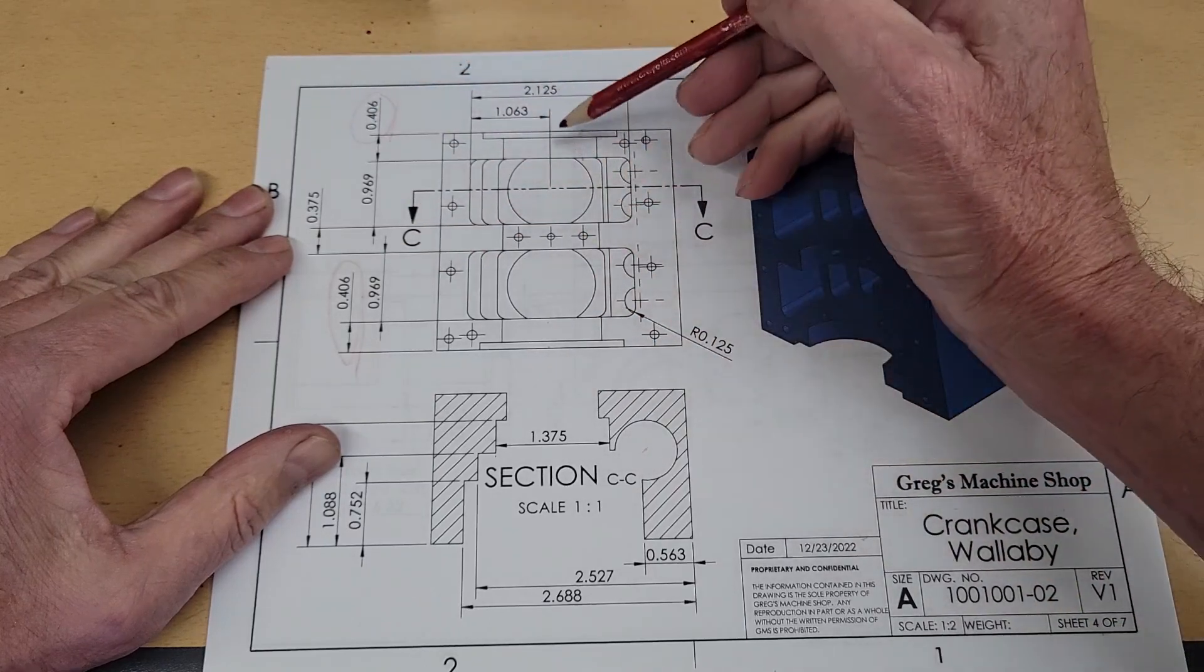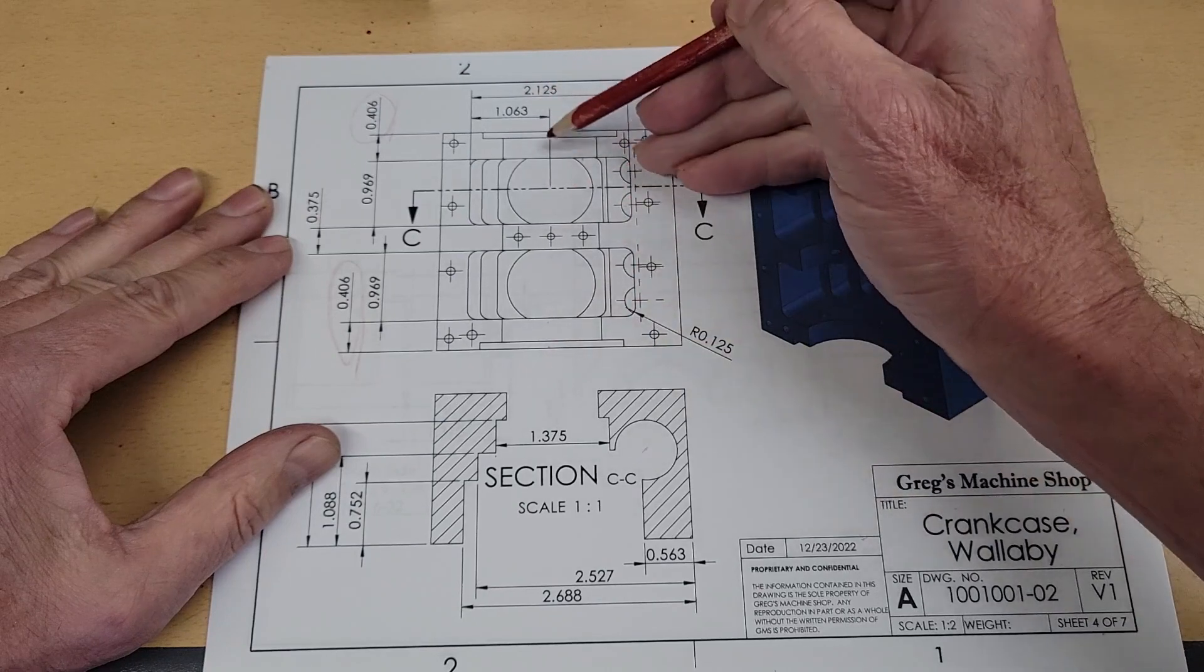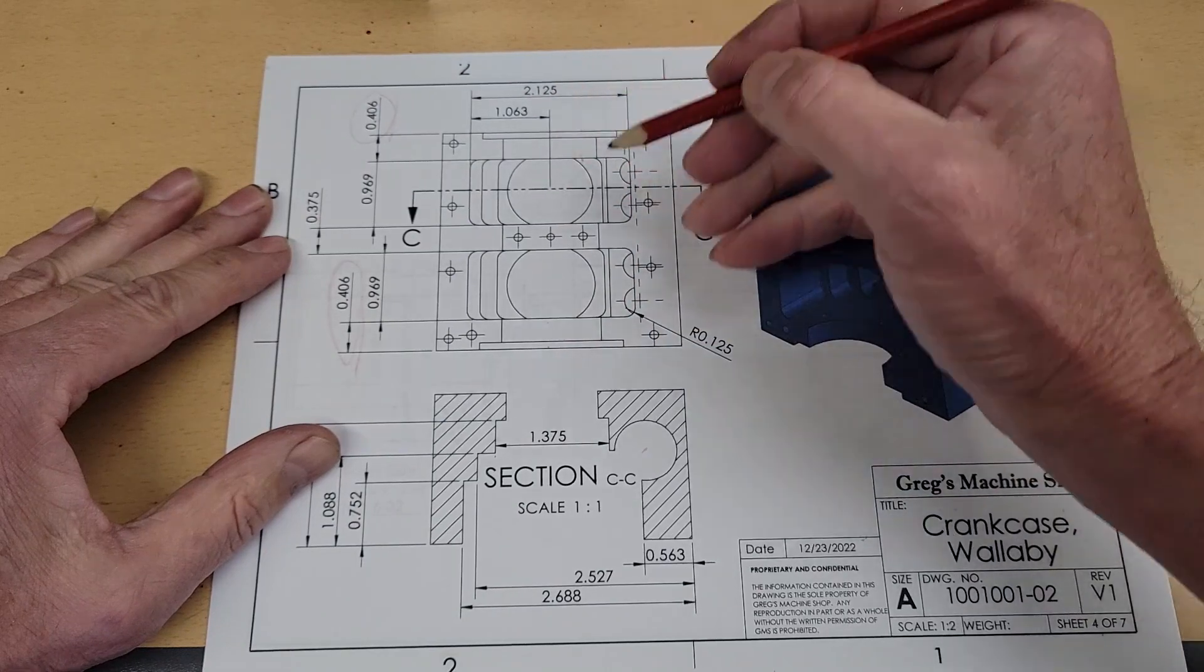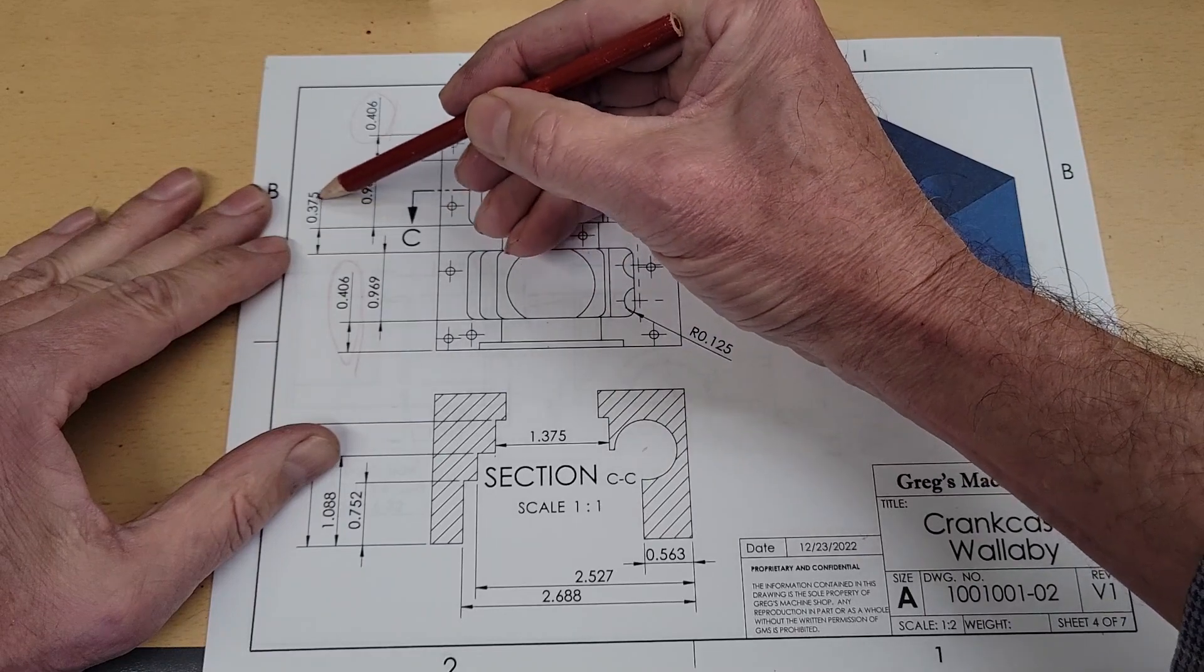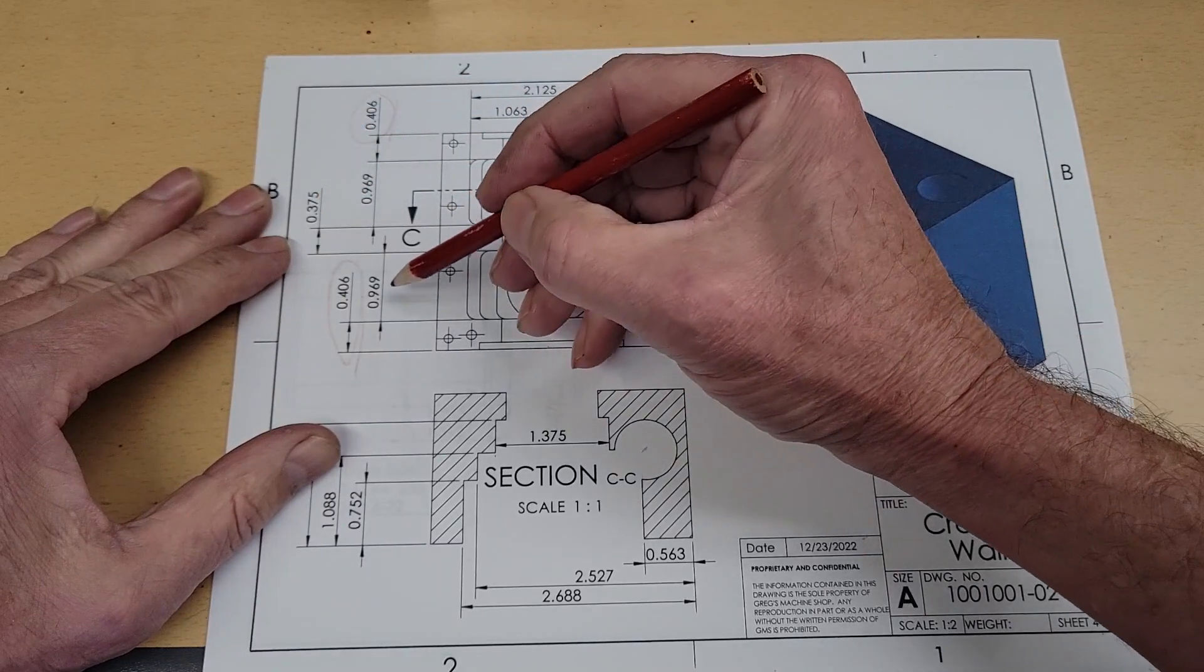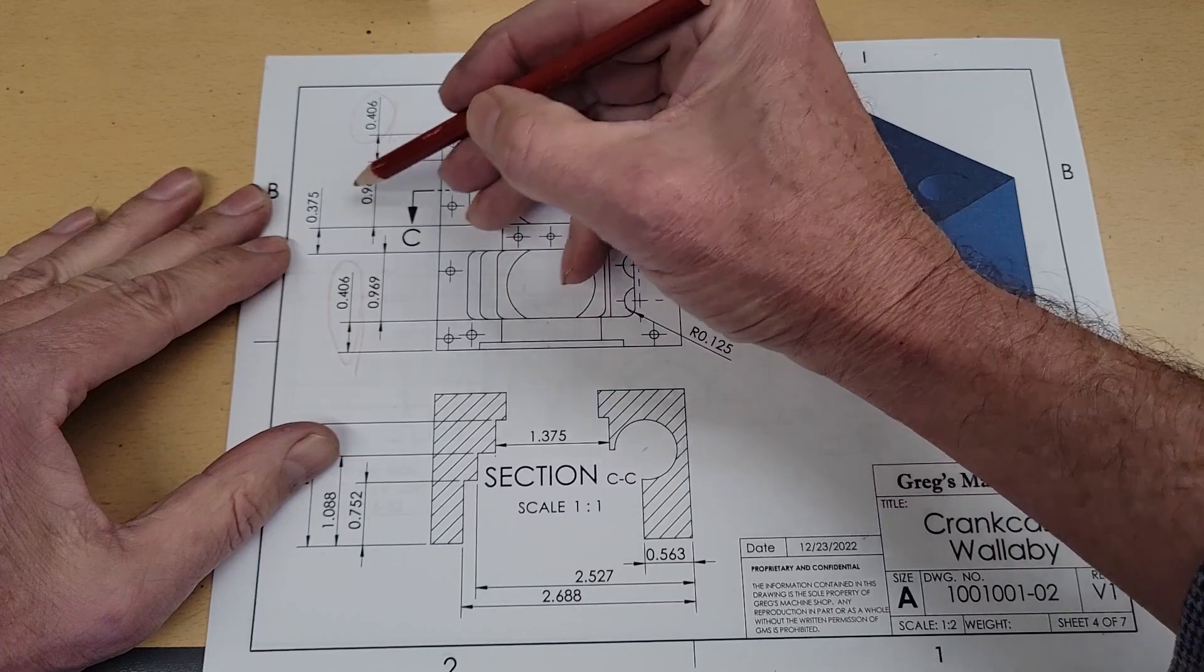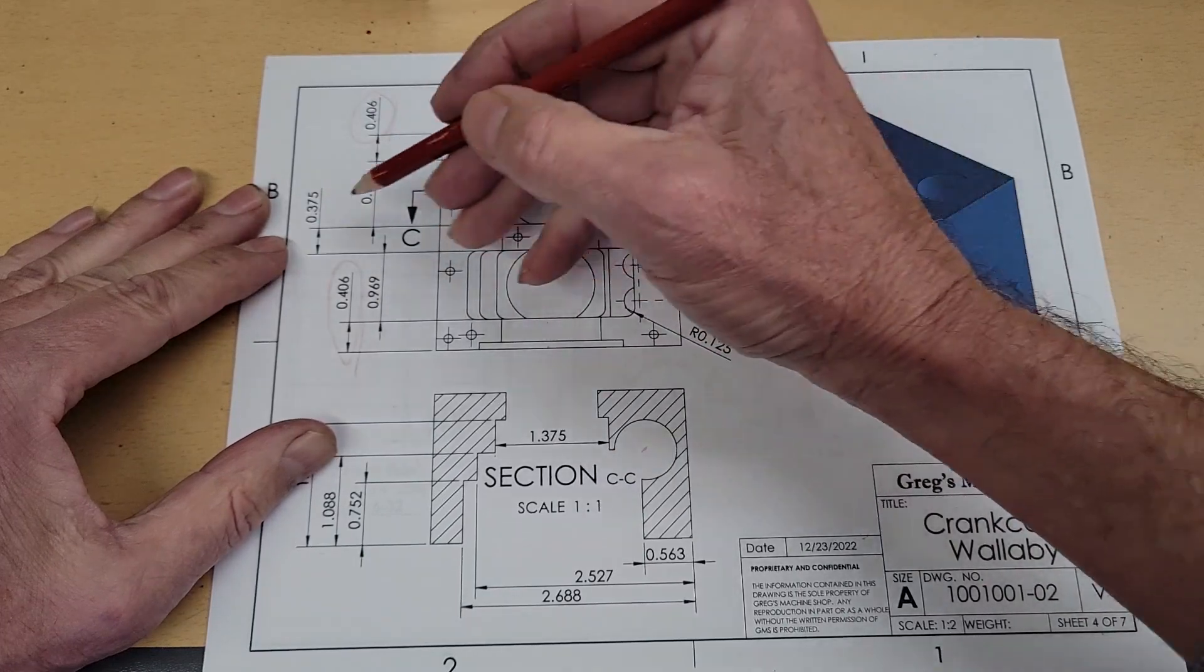So we don't interfere with the crankshaft end-to-end play. After that dimension, the center web is 375. If you need to adjust these two numbers a little bit to hit the 375, that's okay.